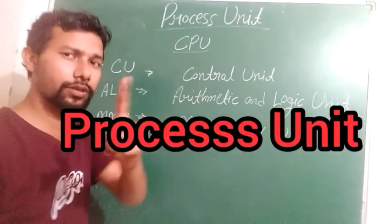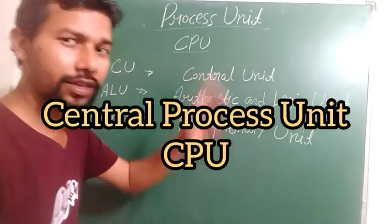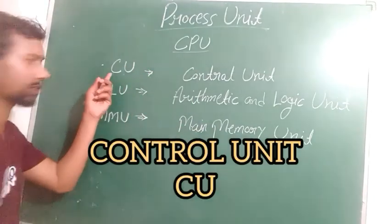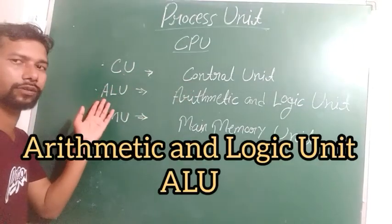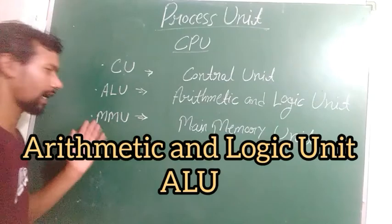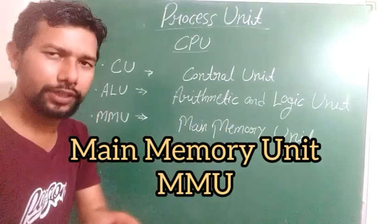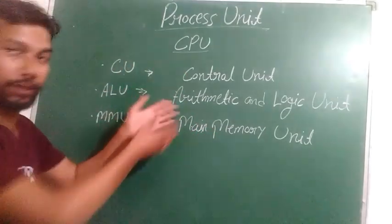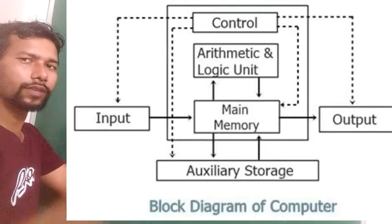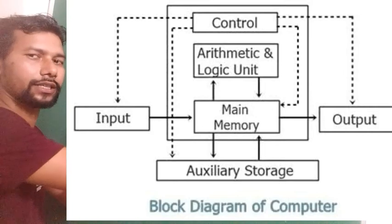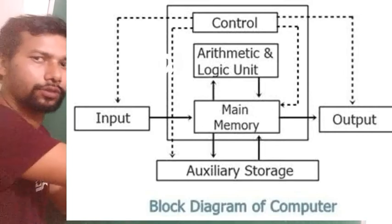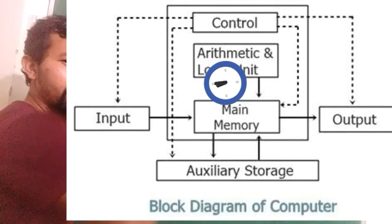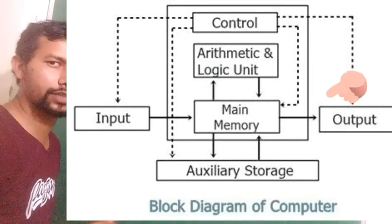The next term for computer system is the Process Unit. The process unit has only one device: the CPU, which stands for Central Processing Unit. The CPU is the brain of the computer. CPU has three basic parts: CU — Control Unit; ALU — Arithmetic and Logic Unit; and MMU — Main Memory Unit. According to your input, the CPU performs processing operations and sends results to the output device.